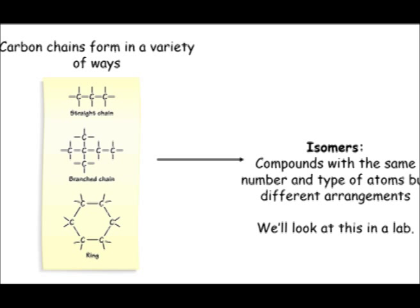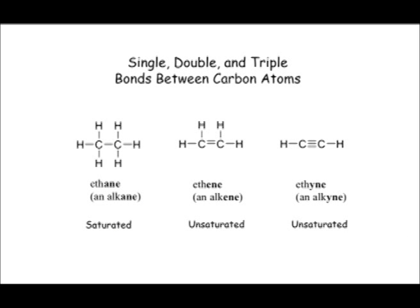Three vocabulary words: alkane, alkene, and alkyne. Ethane is an alkane — all single bonds to carbon. However, you could double bond or triple bond. If you have a double bond, it's called an alkene. If you have a triple bond, it's called an alkyne. So alkanes are single bonds, alkenes are double bonds, and alkynes are triple bonds between carbons.